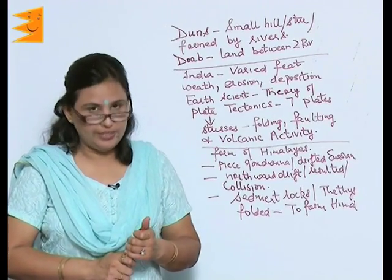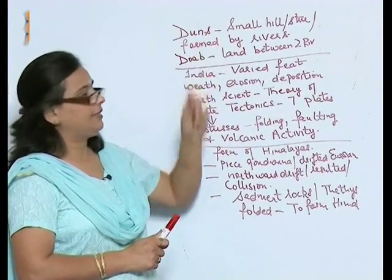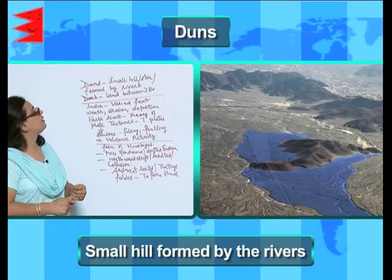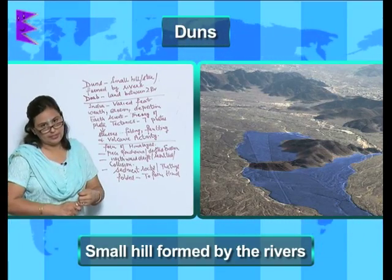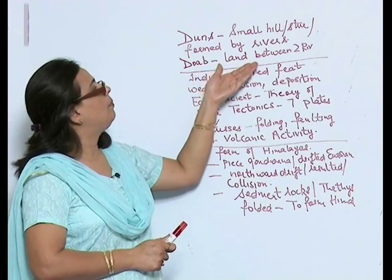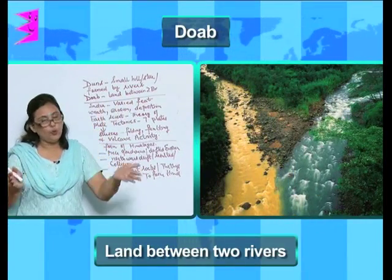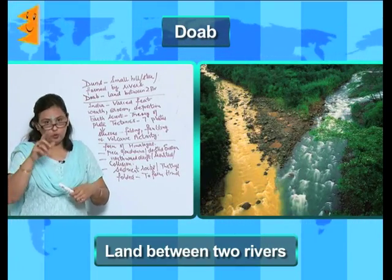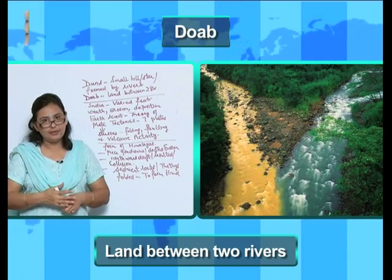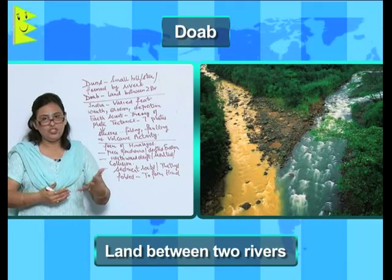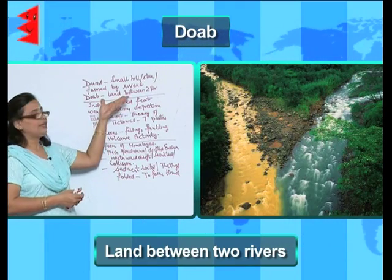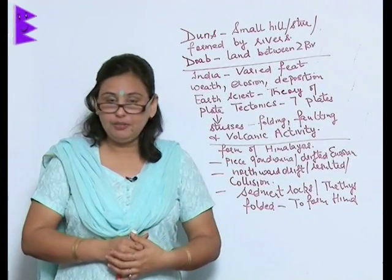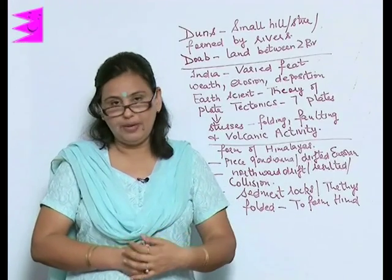A few more terms and concepts: the 'dunce' is actually a small hill which is formed by rivers. The next term is 'doab' — doab is a land between two rivers. It comes from the Punjabi word doab: 'do' means two and 'ab' means river water. So doab is a Punjabi word which means land between two rivers.